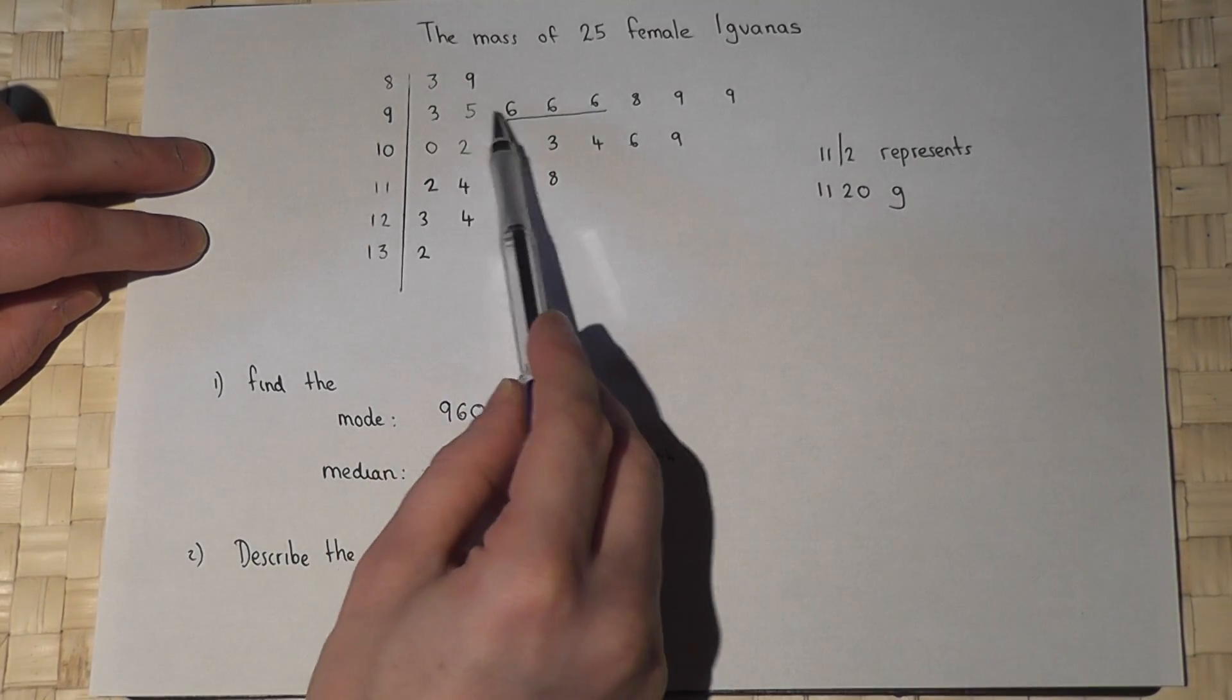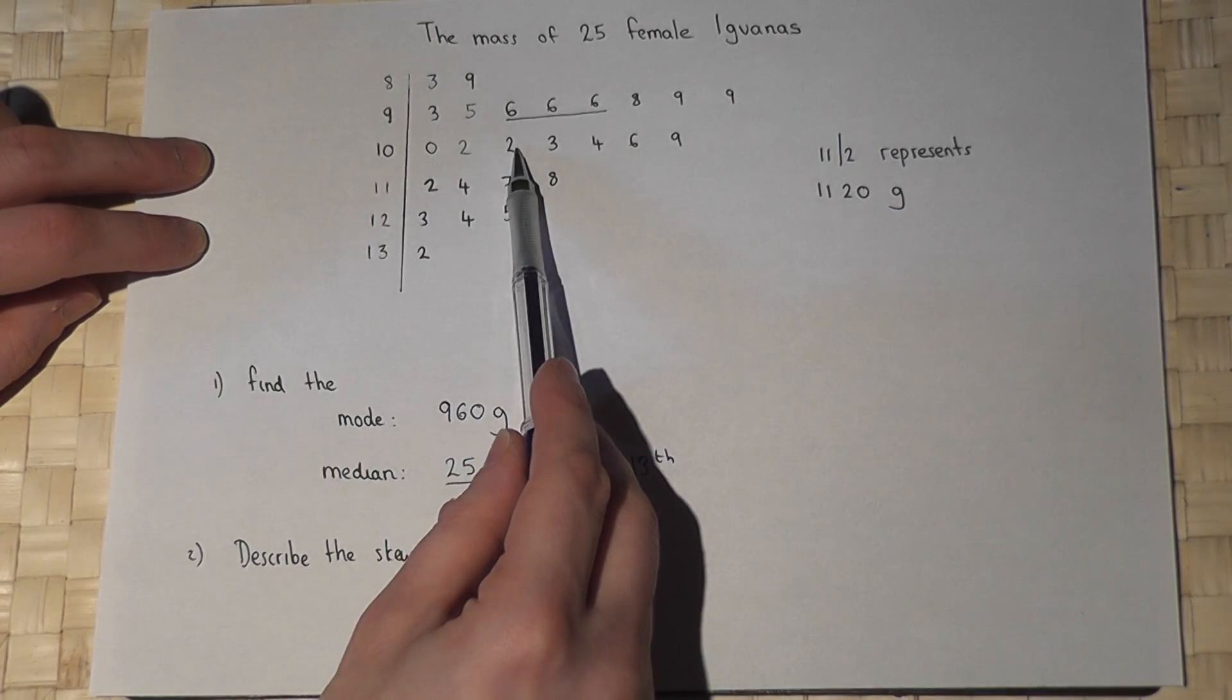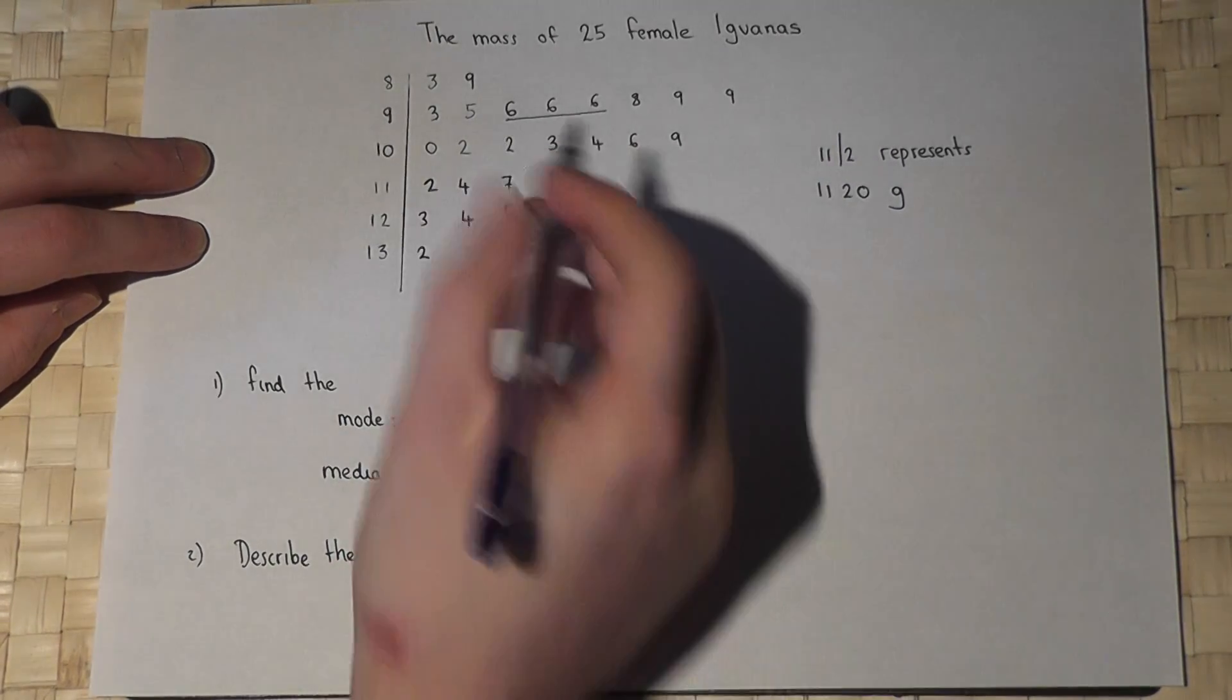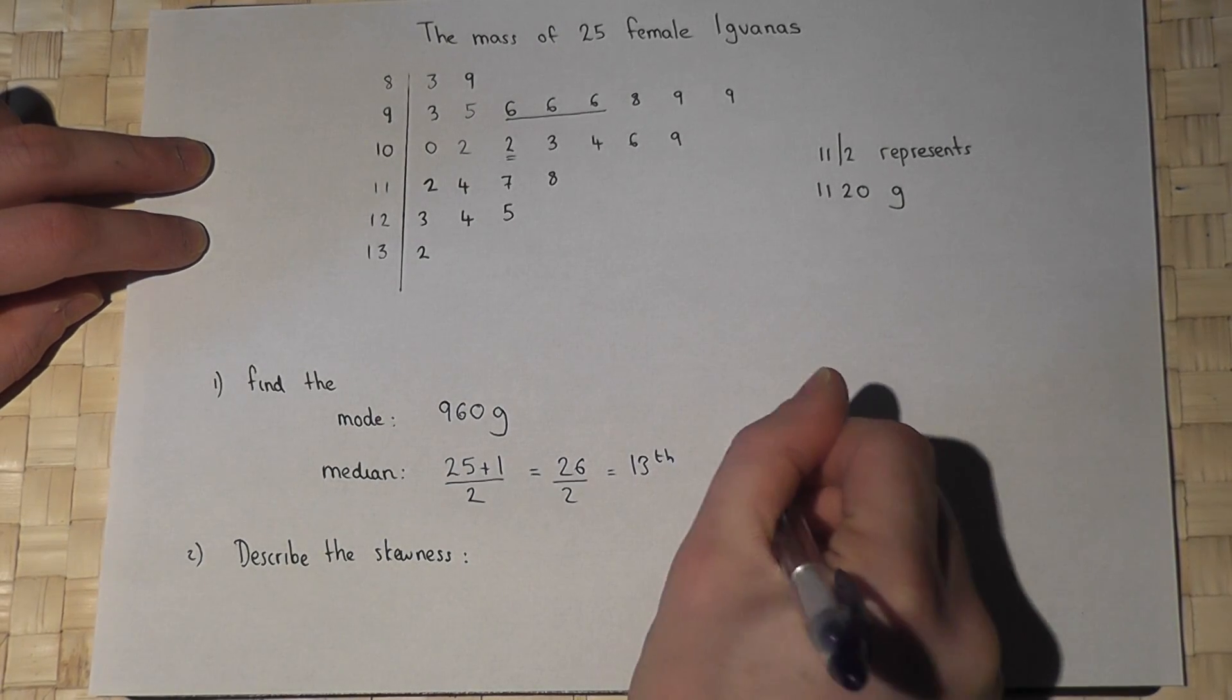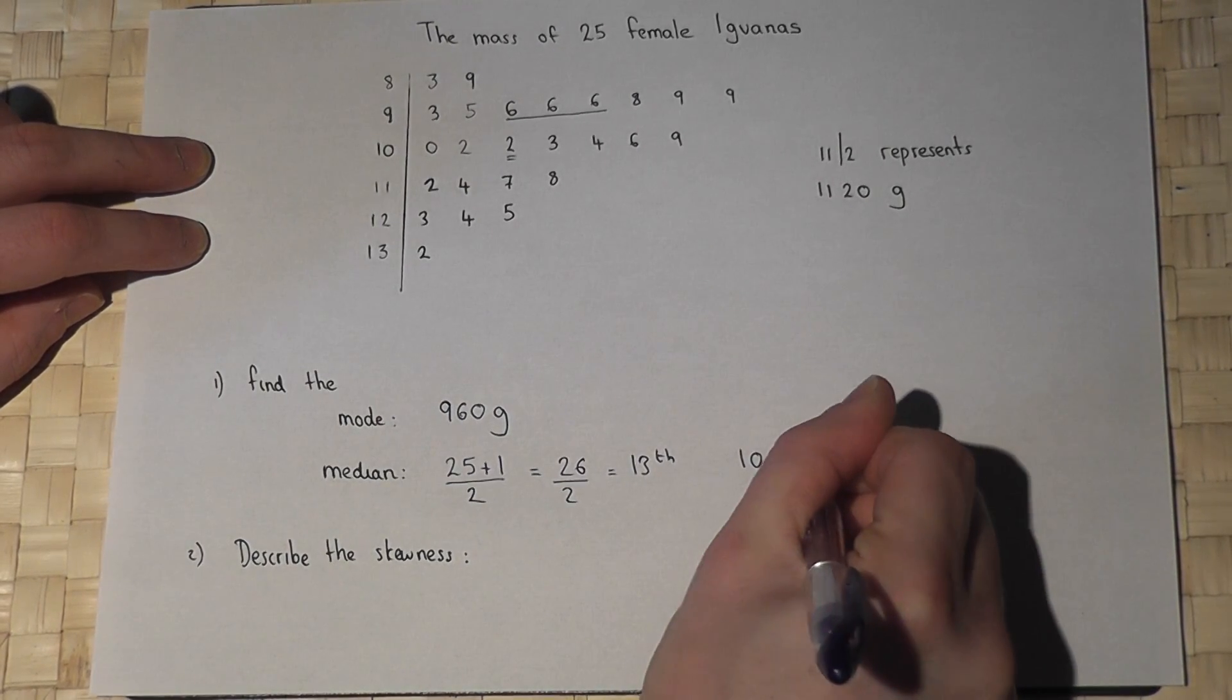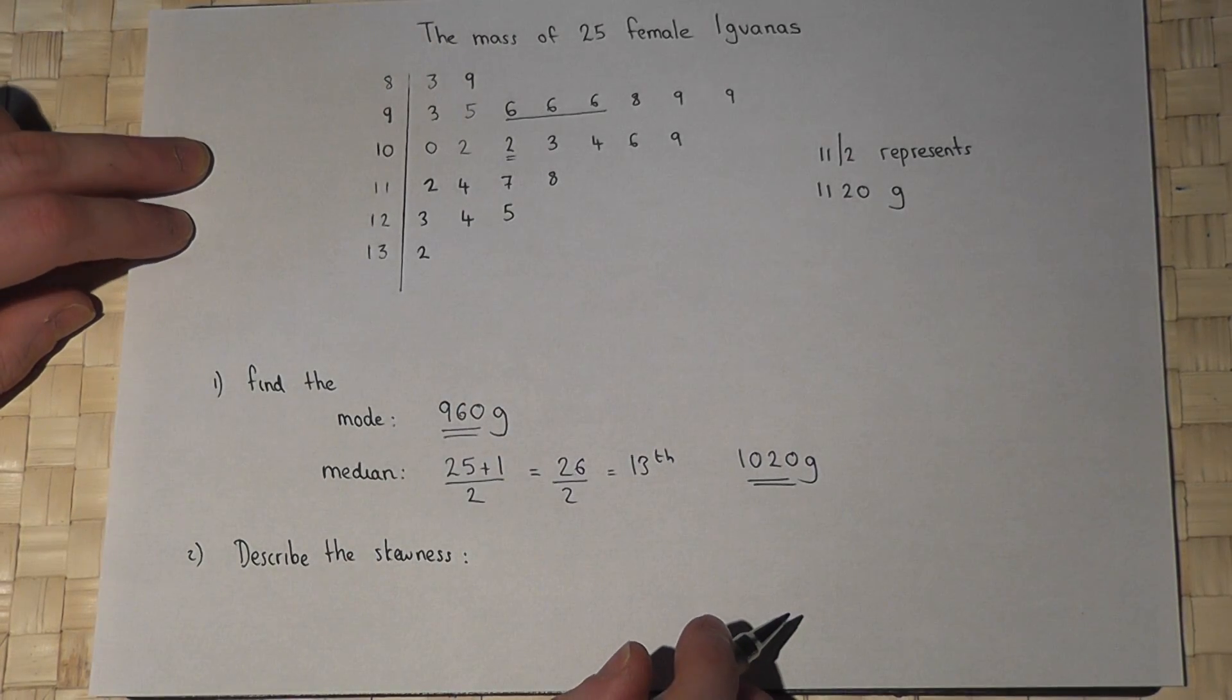Counting: 1, 2, 3, 4, 5, 6, 7, 8, 9, 10, 11, 12, 13. So the median is 1020 grams.